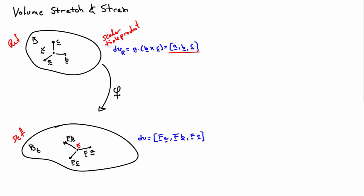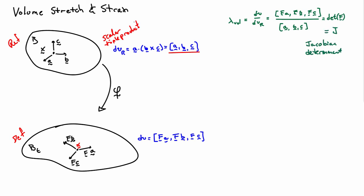The volume stretch is defined as the ratio of these two volumes: lambda_vol = DV divided by DV_R. This is simply a ratio, not a derivative. Plugging in our expressions for DV and DV_R gives us the ratio of the scalar triple products. This expression appears in the definition of the determinant — in fact, it is simply the determinant of the tensor F. We often use the symbol J to denote det(F), and J is known as the Jacobian determinant. There's an intimate relationship to the Jacobian from vector calculus, which we'll take as nomenclature for now.